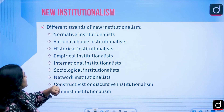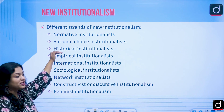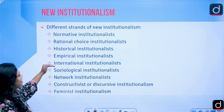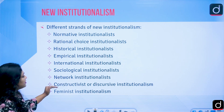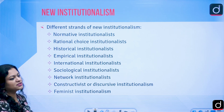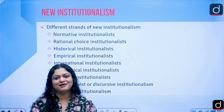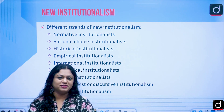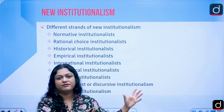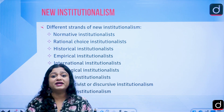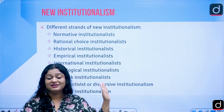Lowndes and Roberts identified different strands of new institutionalism: normative institutionalism, rational choice institutionalism, historical institutionalism, empirical institutionalism, international institutionalism, sociological institutionalism, network institutionalism, constructivist or discursive institutionalism, and feminist institutionalism — locating institutionalism across virtually every theoretical perspective.